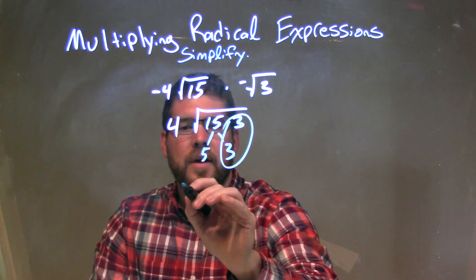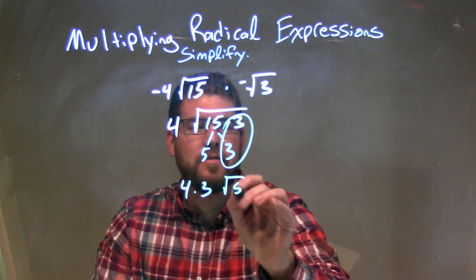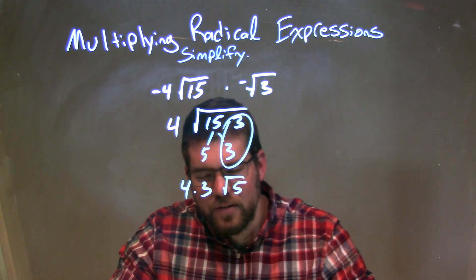I have a pair of 3s right there. They are single on the outside, so we have 4 times 3 on the outside. The square root of 5 is left on the inside. Or 5 is left inside the square root.